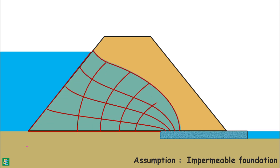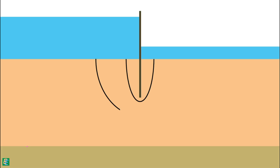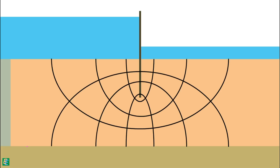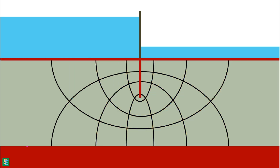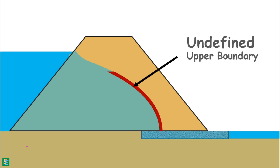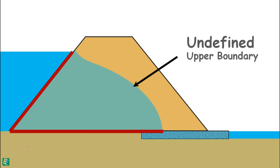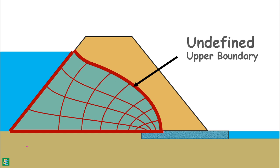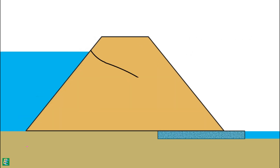One method to estimate seepage quantity is the flow net. We have already discussed flow net construction for confined flow, where all boundary conditions are known. However, seepage through an earth dam is a case of unconfined flow — the upper boundary is not known. So we begin with what we know and attempt to find the missing boundary condition to construct the flow net.